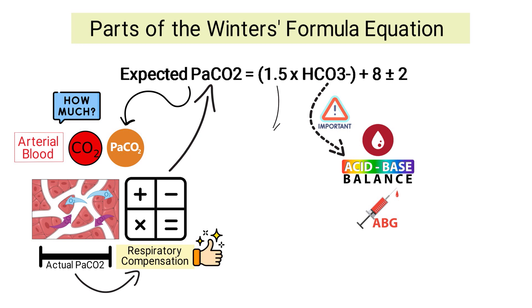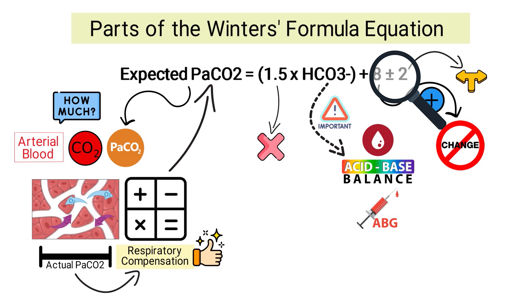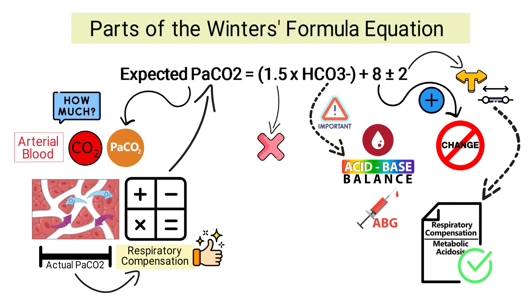Next is the 1.5 constant, which is a fixed value in the equation that does not change — it is multiplied by the bicarb value to help calculate the expected PaCO2 range. Then there is the 8 constant, another fixed value added after the bicarb is multiplied by 1.5. Finally, the plus or minus 2 constant represents the standard deviation of the expected PaCO2, so the expected range is plus or minus 2 from the calculated result.